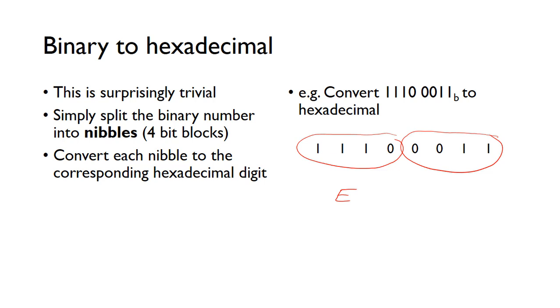And then 0, 0, 1, 1 is just 3. So we'll just know that value in hexadecimal is just 0xE3, so very simple. Just split into blocks of nibble, 4, and then convert each one to the corresponding hexadecimal digit very easy.